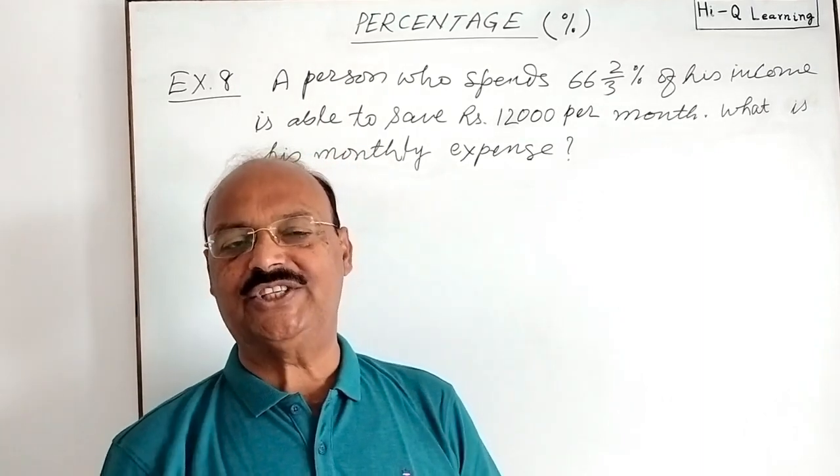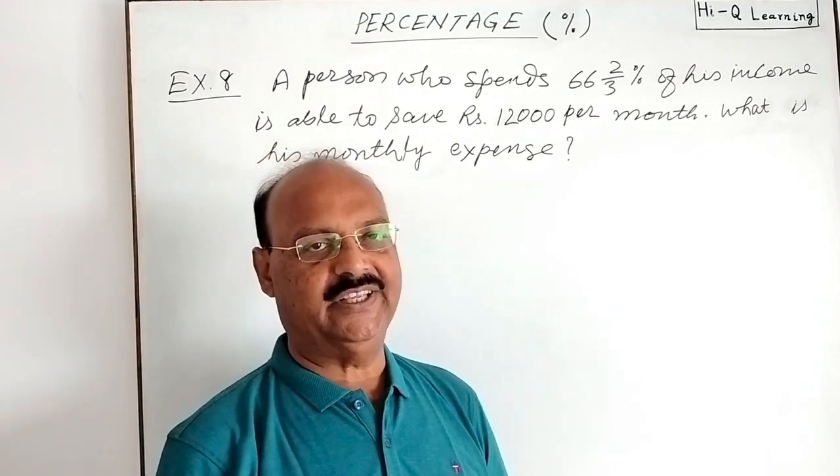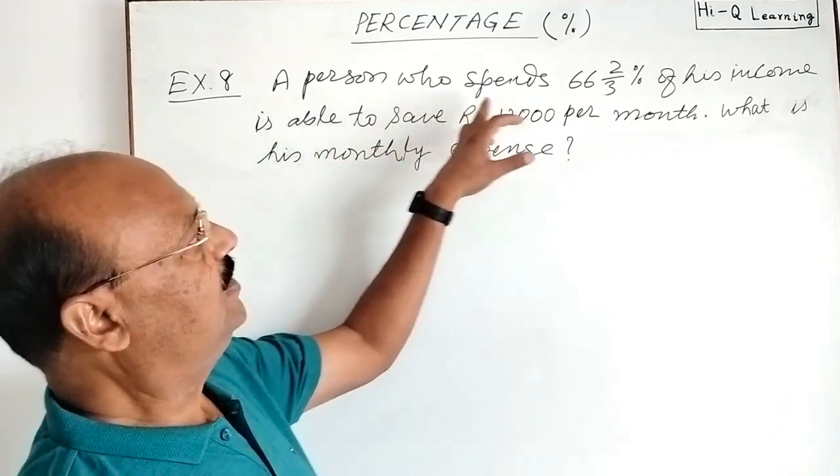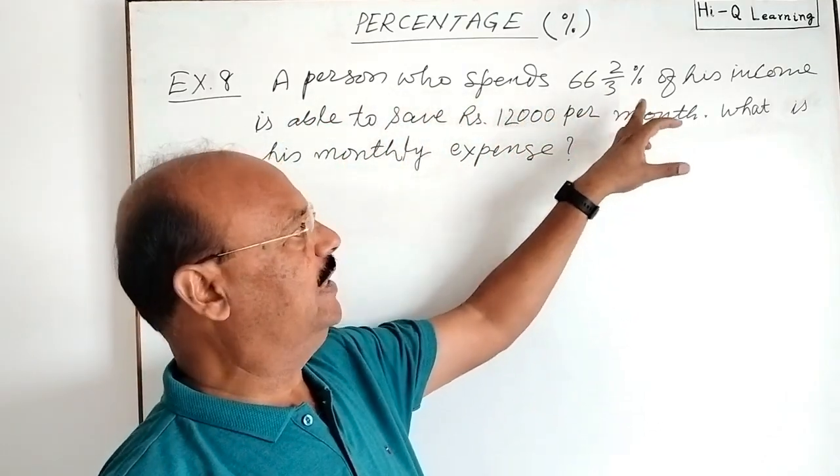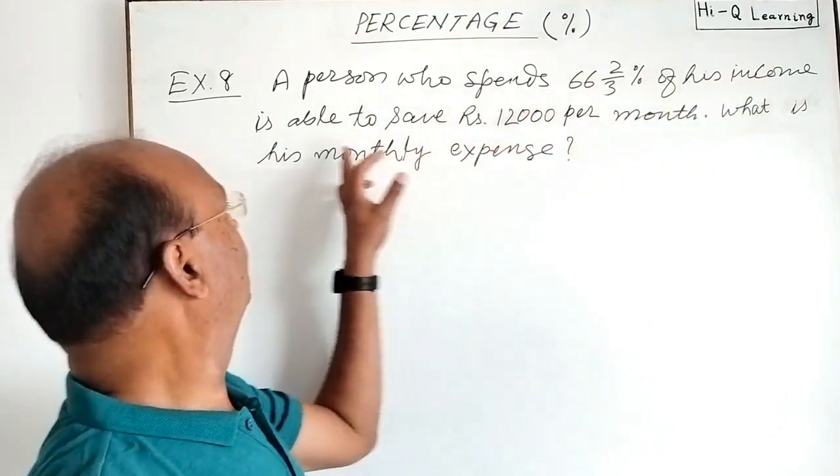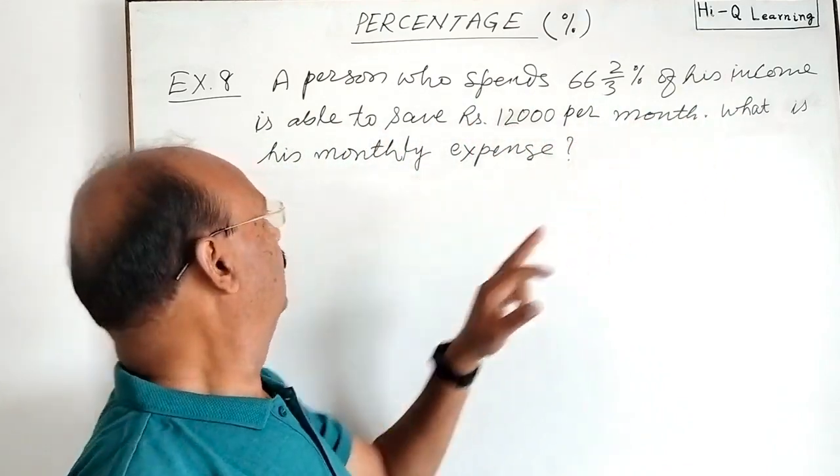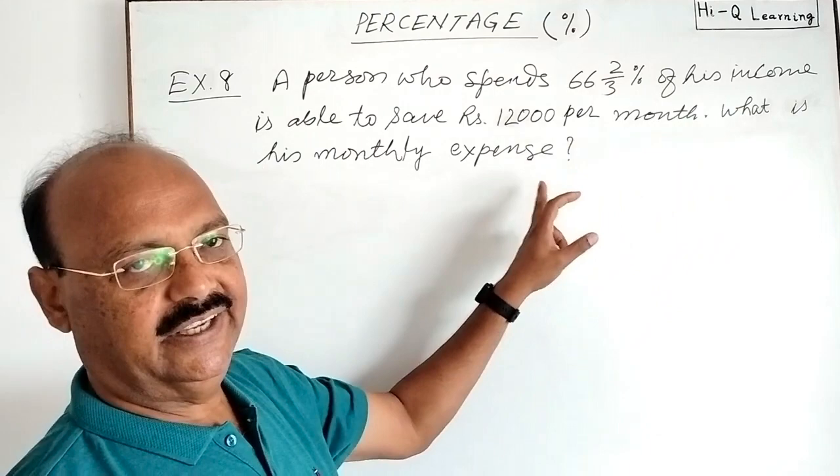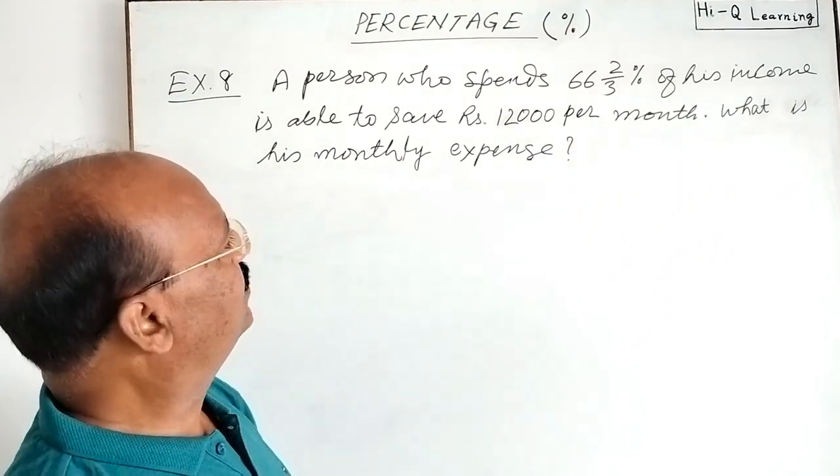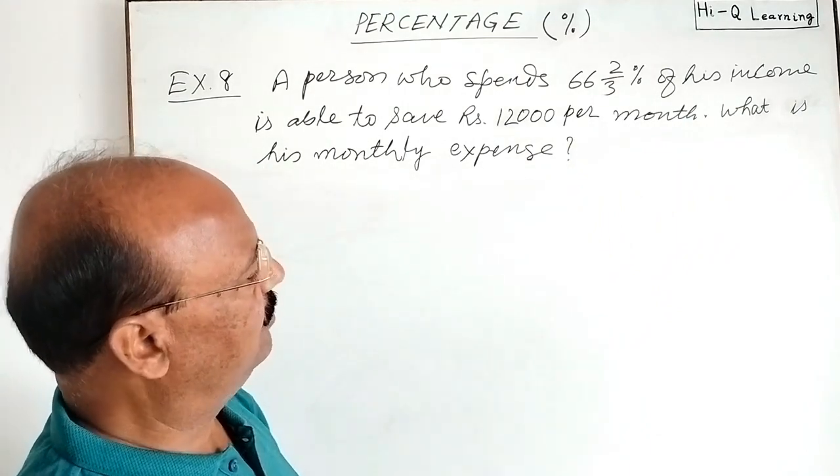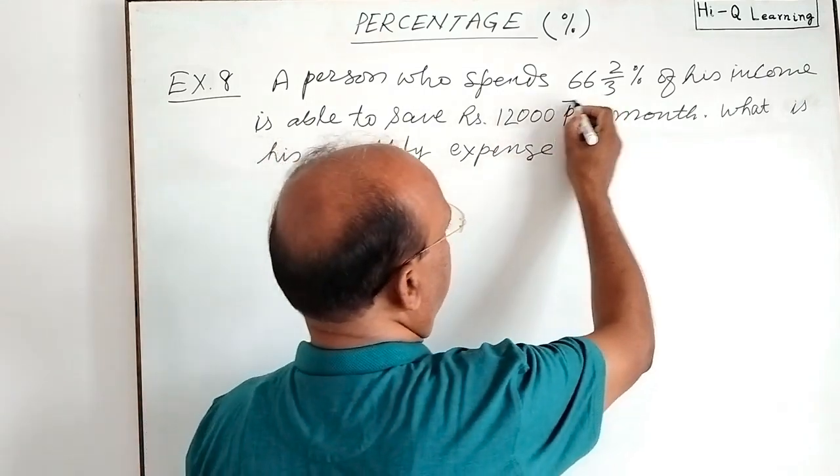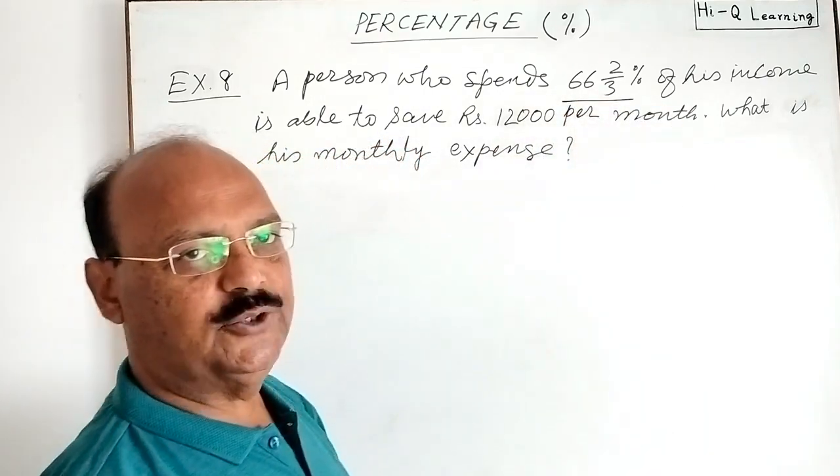Welcome students, let us see a very interesting question from the topic percentage. The question is: a person who spent 66 and 2 by 3 percent of his income is able to save rupees 12,000 per month. What is his monthly expense? So you see this question, what data is given here? Expenditure is given 66 and 2 by 3 percent and saving is given 12,000 per month.